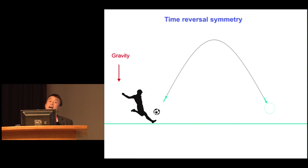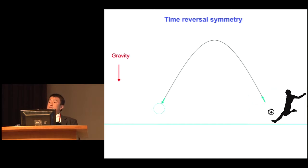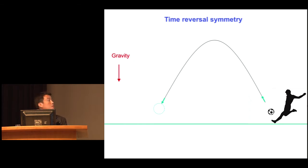To see that gravity has time reversal symmetry, what you would need to do is put the soccer ball at the end point, reverse the direction of the velocity — practically, kick the soccer ball at that end point at that particular angle with a particular force. If the velocity is exactly reverted, the soccer ball is going to go through the same trajectory and end up where you started. This illustrates time reversal symmetry: a symmetry between the forward motion and the backward motion of the particle.